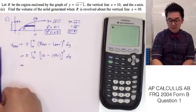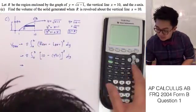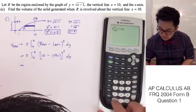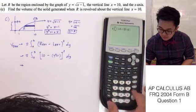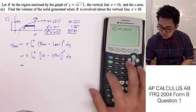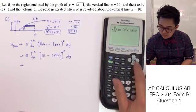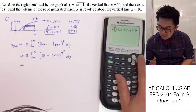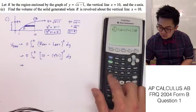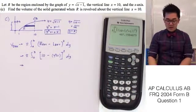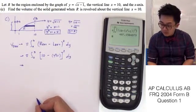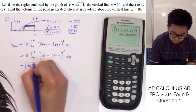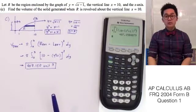Using the calculator to find the volume of R revolved about x equal to 10: pi times Math 9, from 0 to 3, of (10 minus (x squared plus 1)) squared, dx — where x represents y in the calculator. Our calculator gives us 407.1504, so the volume is 407.150 unit cubed. This is how we answer problem letter C.